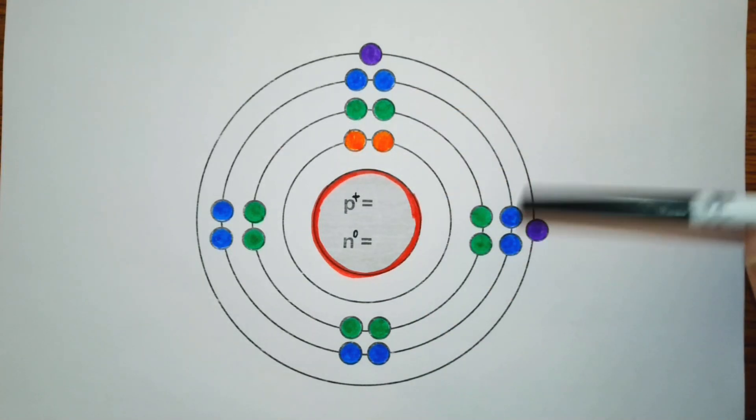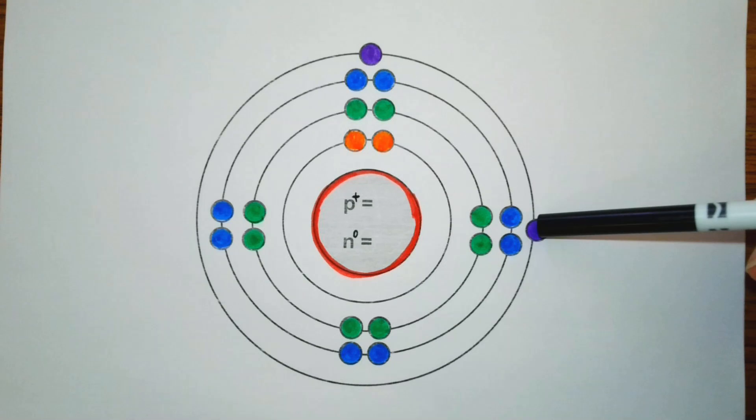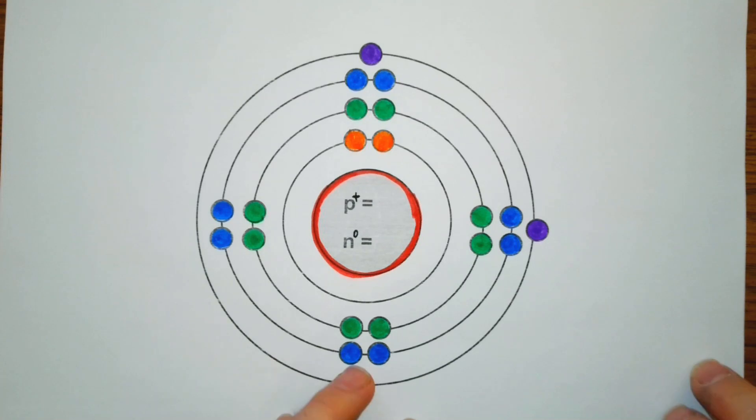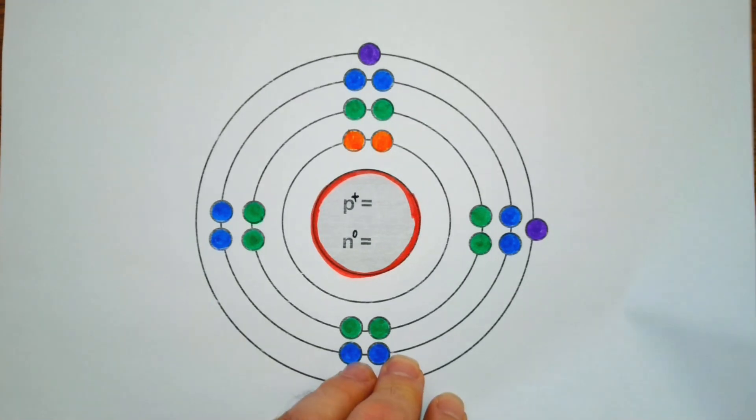In this fourth orbital we're going to have it holding a maximum of two and these will be unpaired, and this covers all the atoms up to calcium. After that we'll start dealing with the transition metals and then electrons start behaving a little bit differently. So this will get you covered from everything from hydrogen all the way up to calcium.